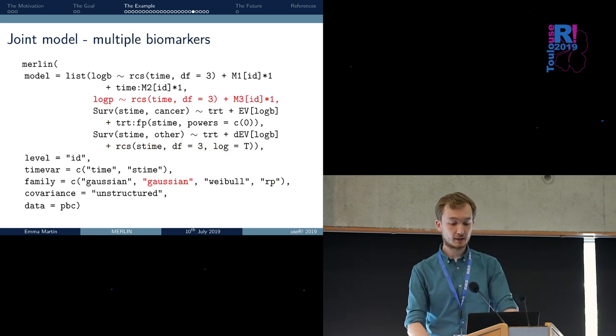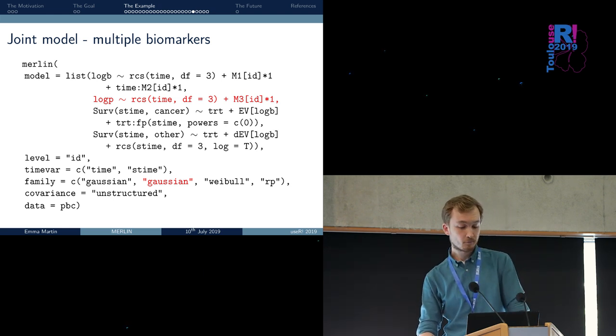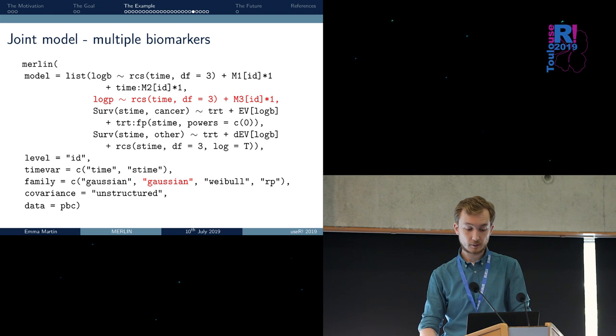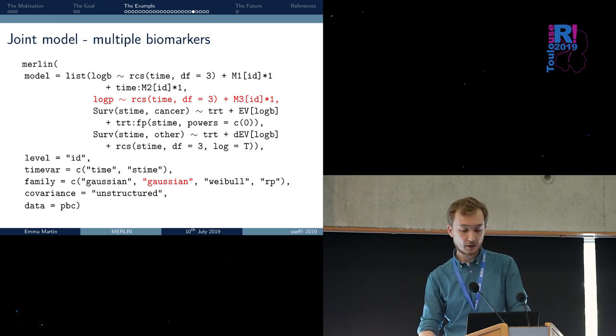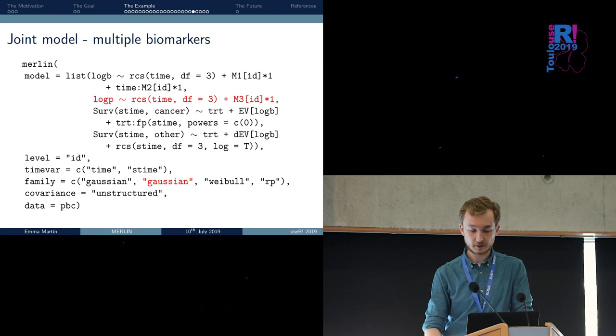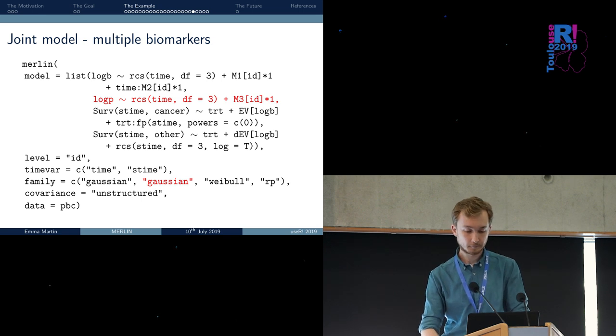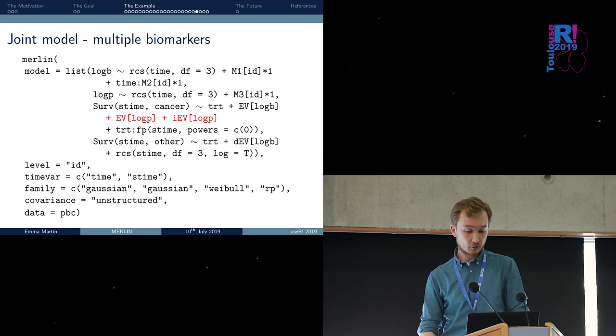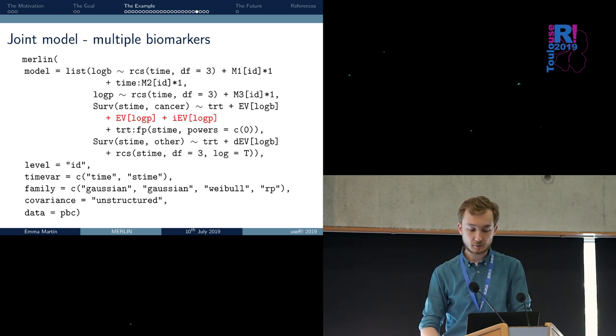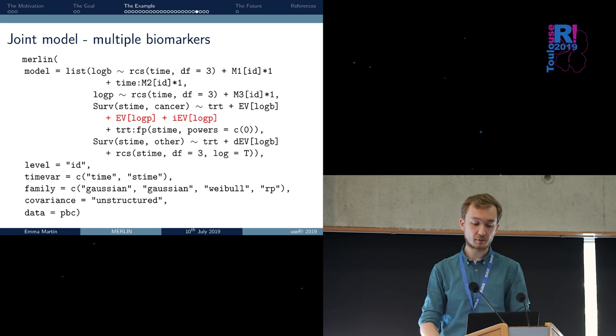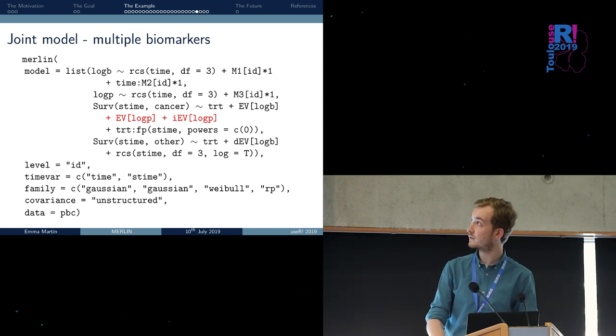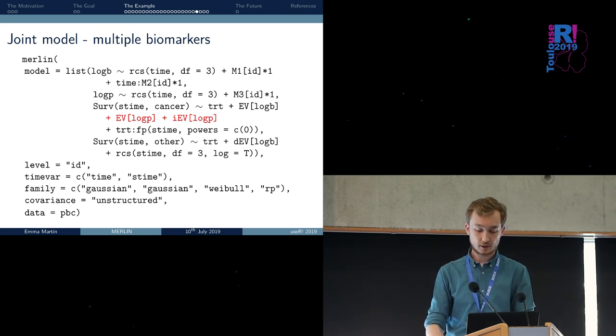We could also add a second longitudinal biomarker. For instance, here we add the logarithm of prothrombin index. Once again, we modeled this flexibly using restricted cubic splines. We include a random intercept at the ID level, identified by the M3 term. We can include the association between this biomarker and, in this case, the risk of dying because of cancer. We include the expected value and the cumulative effect.